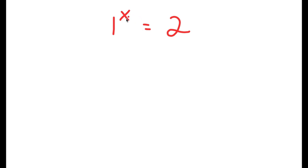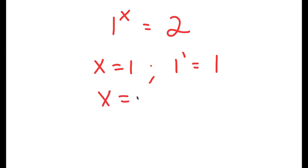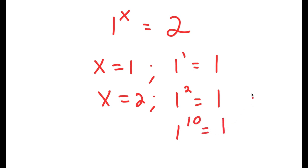Before we even start solving this, if x is equal to 1, then I have 1 to the power of 1, which is equal to 1. And if x is equal to 2, then I have 1 to the power of 2, which is also equal to 1. And you can go even further — 1 to the power of 10 is still equal to 1. So you may be thinking, what possible value of x can make 1 to the power of x equal to 2?